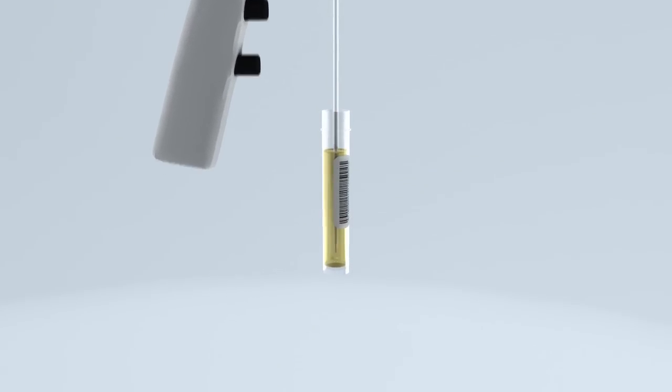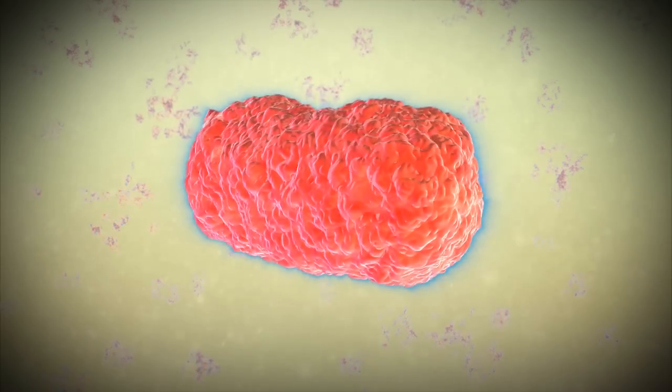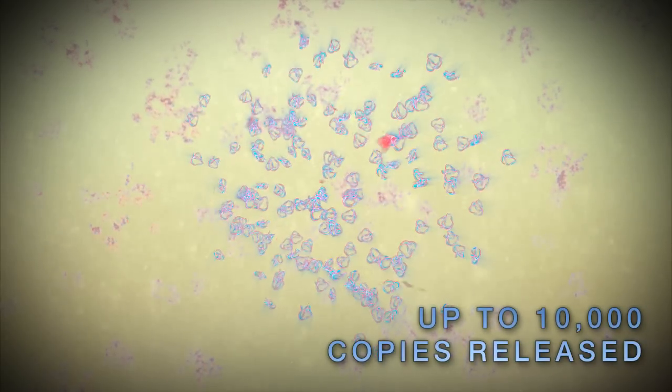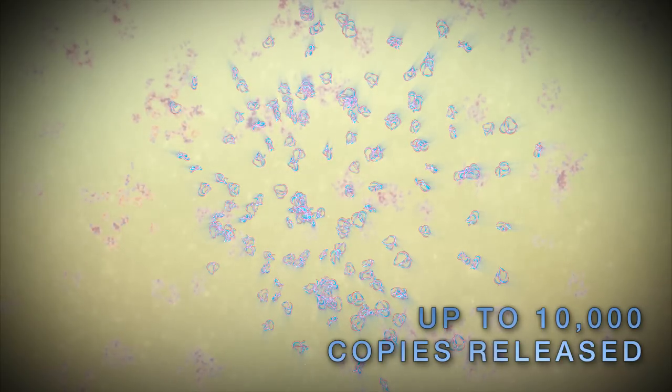Sample preparation requires a single transfer from the enrichment bag to the ROCA transfer tube. When the sample is added to the tube, the lysis of the bacterial cell walls results in a large number of ribosomal RNA targets being released, increasing the sensitivity of the assay over other conventional methods.